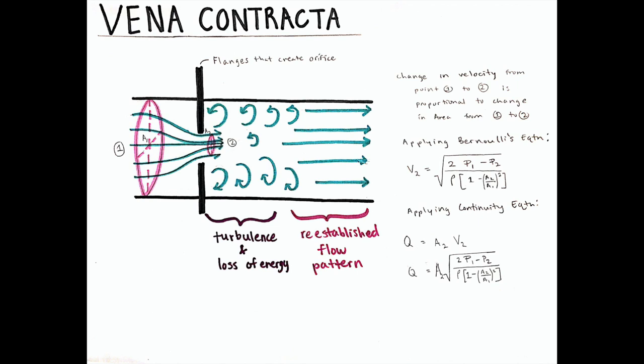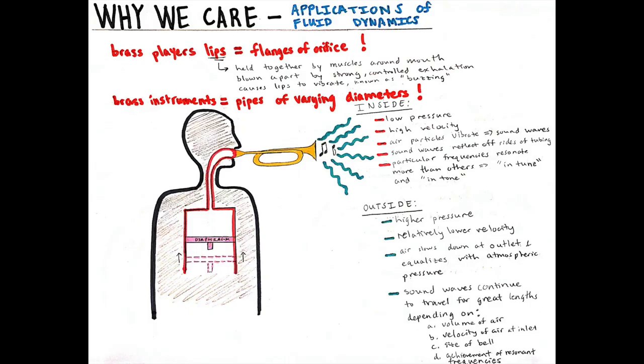The vena contracta concept is similar in that as a fluid flows through an orifice, the cross-sectional area of the moving fluid is also constricted, causing turbulent flow before resettling later on.